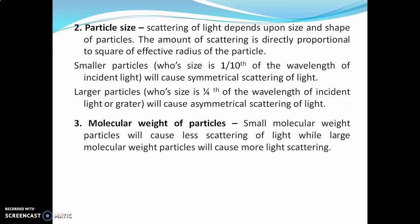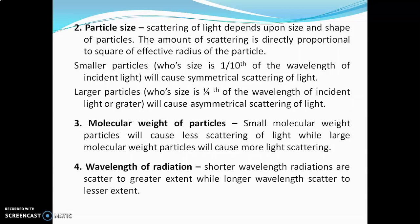The third factor is molecular weight of particles. Small molecular weight particles will cause less scattering of light, while large molecular weight particles will cause more scattering. The fourth factor is wavelength of radiation — shorter wavelength radiations are scattered to a greater extent, while longer wavelength radiations scatter to a lesser extent. Blue light will scatter more and red light will scatter less, because blue has a shorter wavelength and red has a longer wavelength.